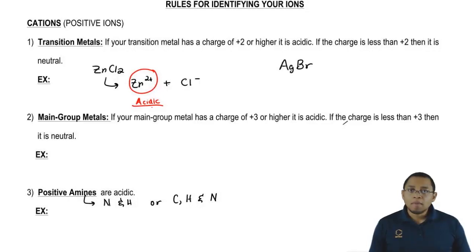Now, silver bromide, when it breaks up, it's going to break up into Ag plus plus Br negative. Now technically, if you remember your solubility rules, silver bromide is insoluble, shouldn't break up. But we're just saying theoretically, if it did break up. Here, it's a transition metal, it doesn't meet the requirement. It has to be plus 2 or higher. This is only plus 1, so instead of being acidic, it would be neutral.